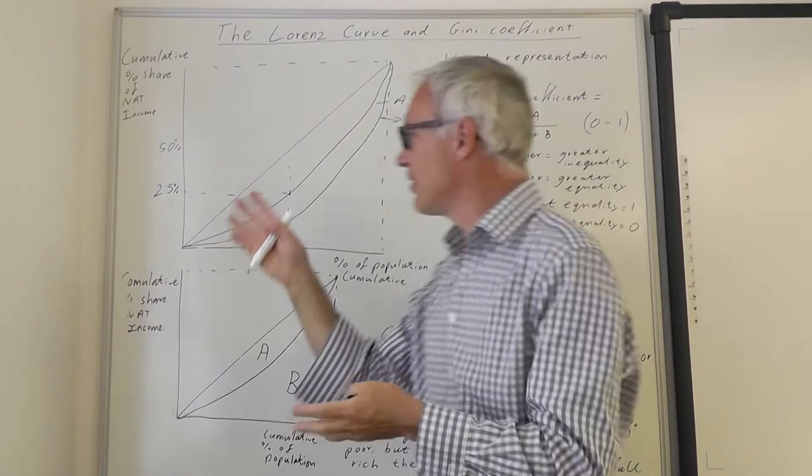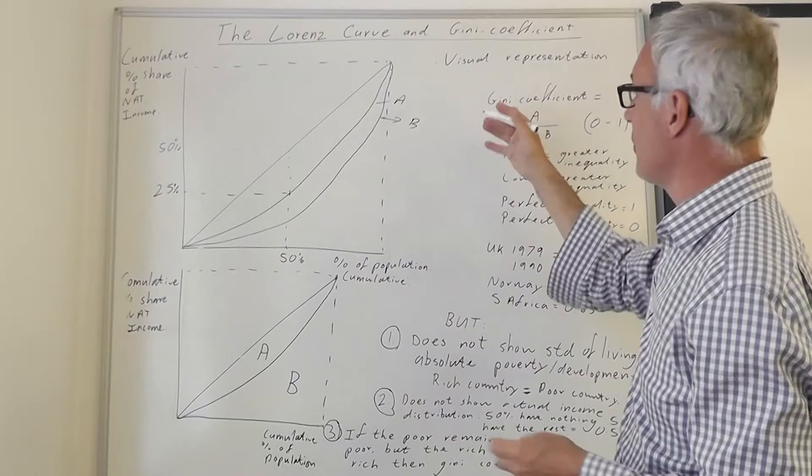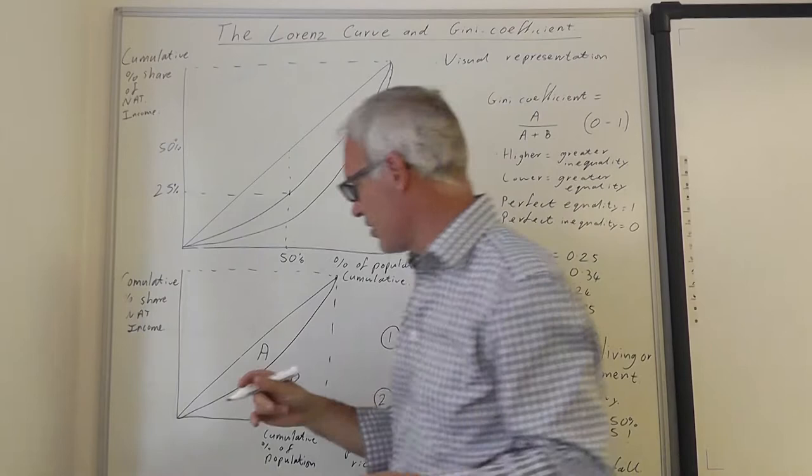The Lorenz curve is very useful because it gives us a visual indication, a visual impression of inequality. However, to be a bit more precise, we can actually measure this using what we call the Gini coefficient.